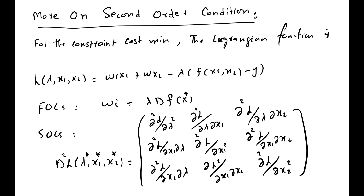This is the given level of output. If we take the first order derivative of the Lagrangian function we will get this set of equations — the first order derivatives. If we put it equal to zero and solve for w, we will get this vector of input prices equal to lambda times the vector of marginal physical productivity of factors x1 and x2.